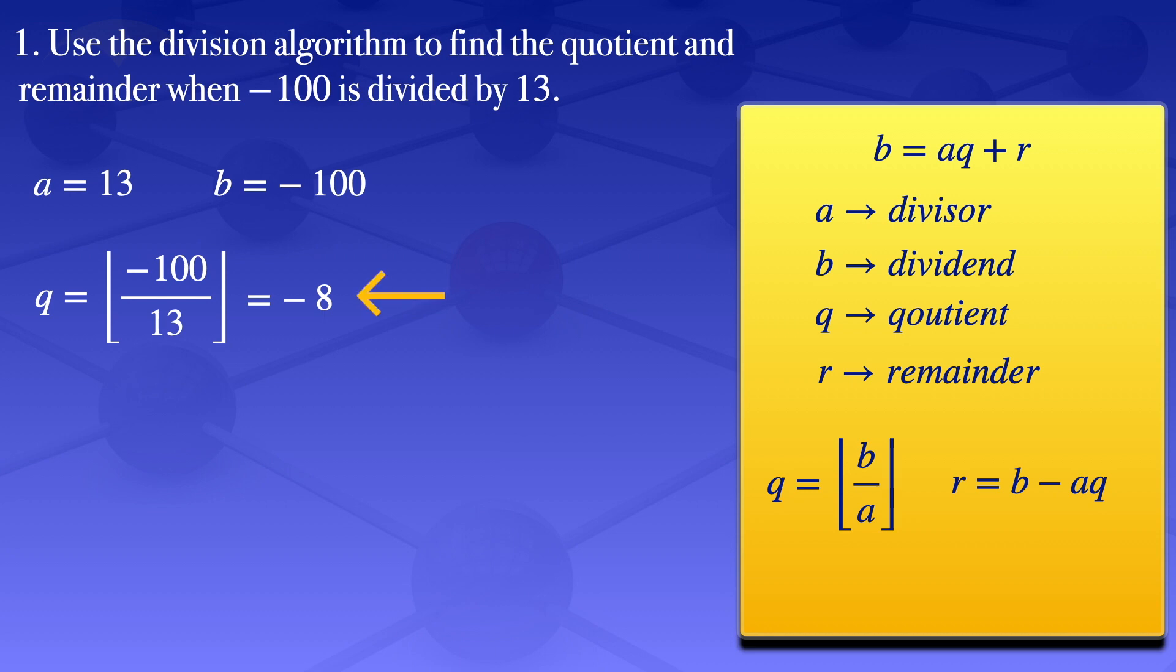We can now use this q to find the remainder using this formula. So our r equals -100 minus 13 times -8, and that will give us 4. So the quotient is -8 and the remainder is 4.